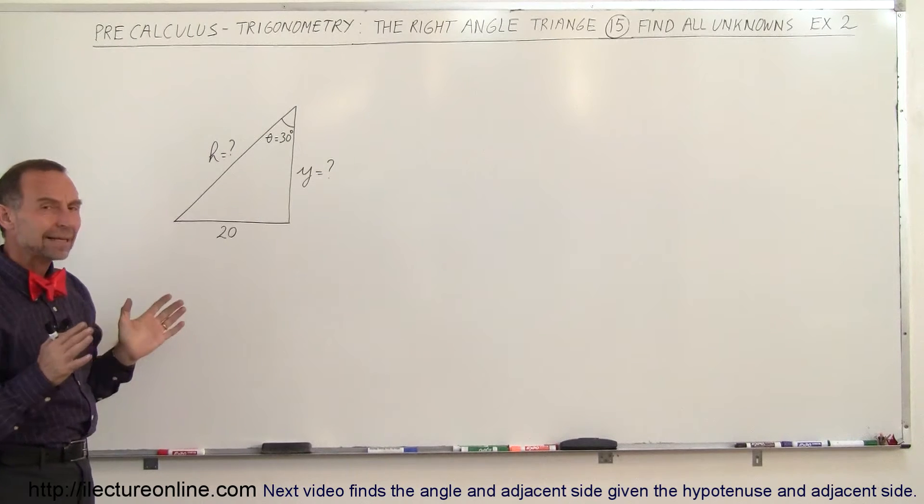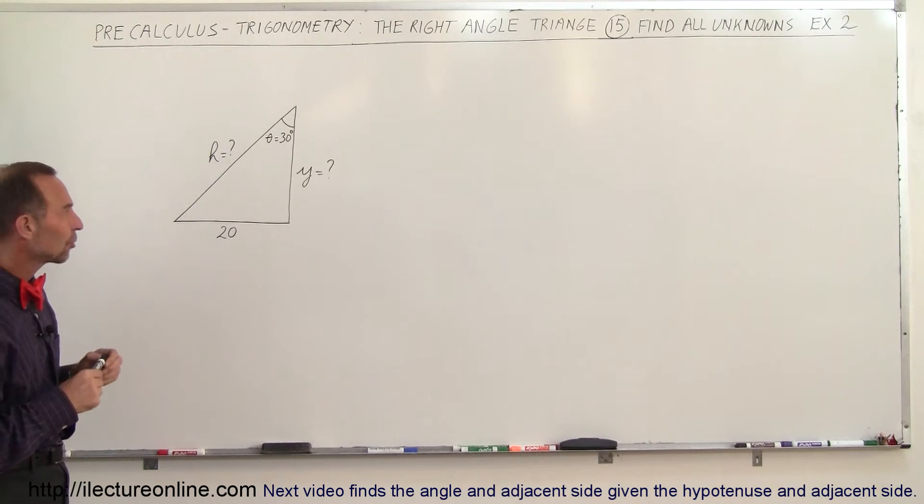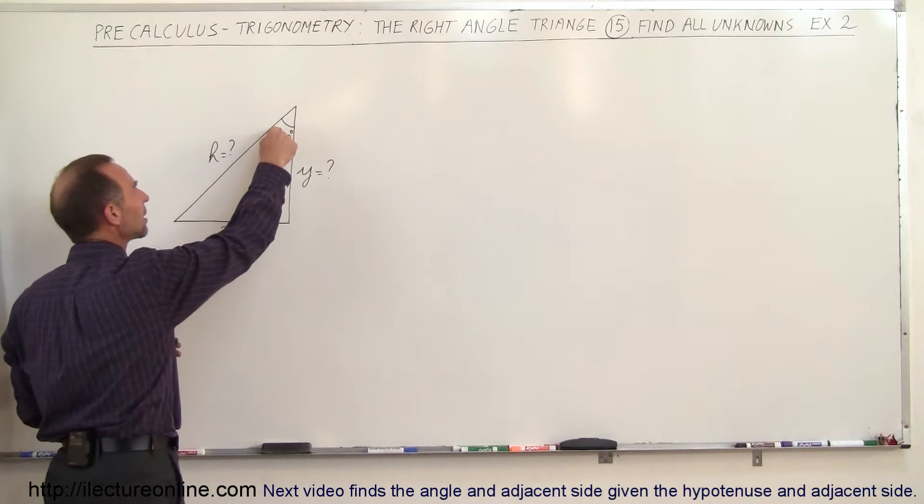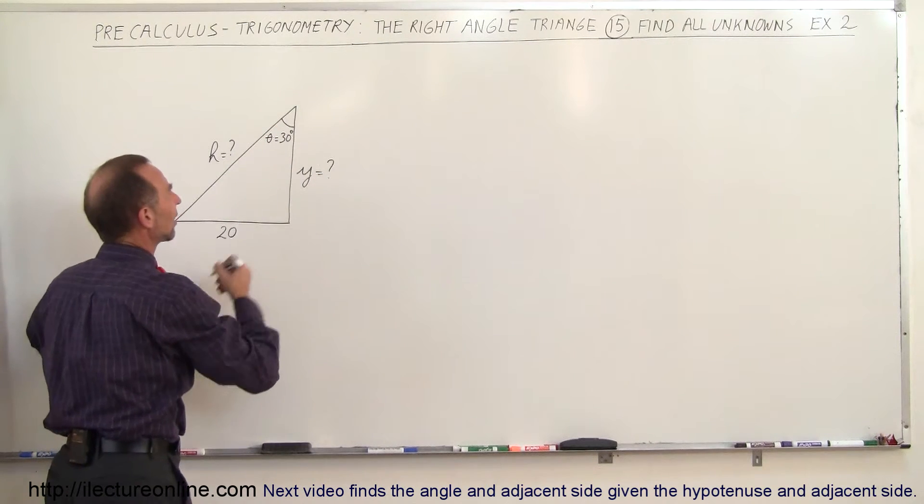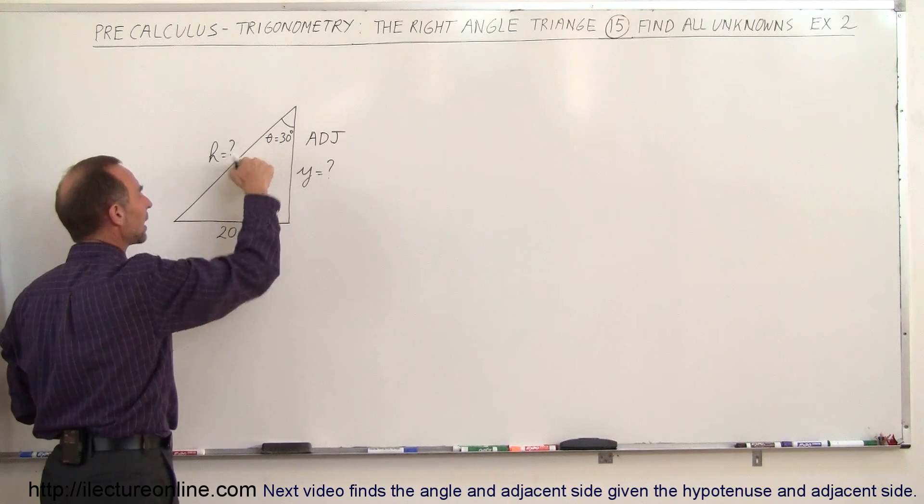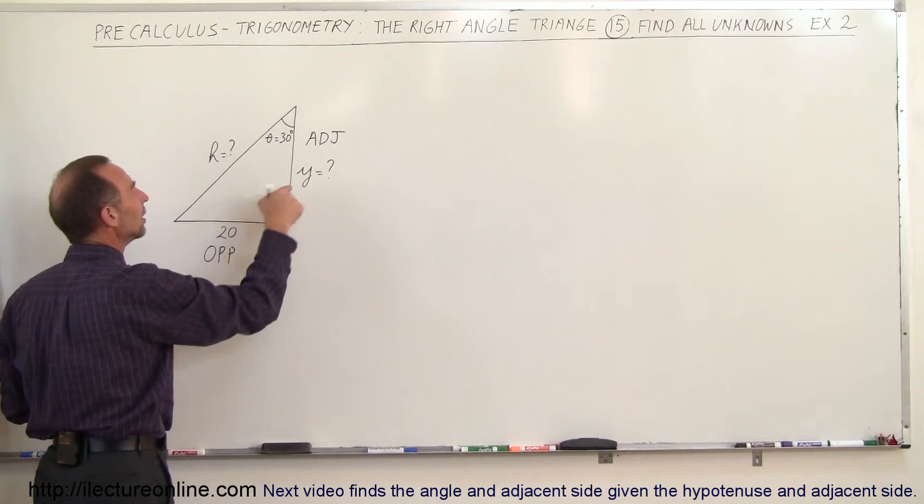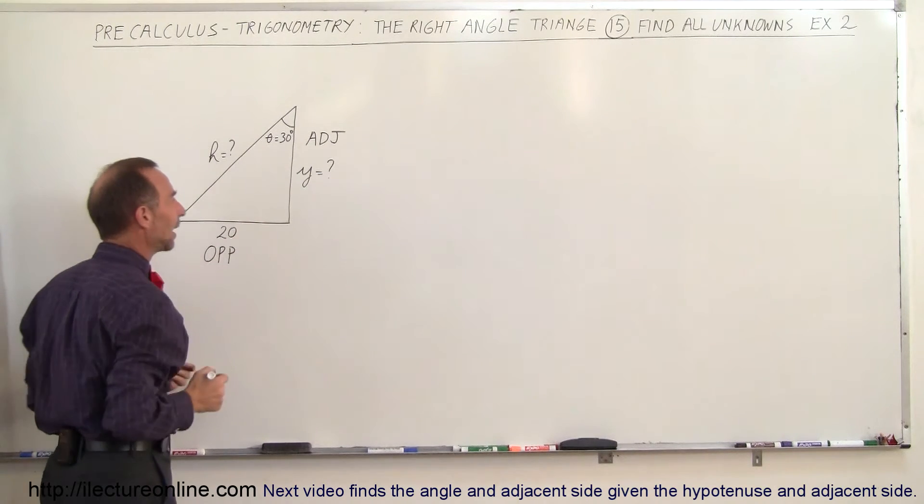Here might not be a bad idea to write which side is the opposite side, which side is the adjacent side, to keep things straight. Since the angle is over here, this now becomes the adjacent side, so let's label it adjacent side. And over here, this is opposite of the angle, so let's call this the opposite side. Notice that the opposite side is given, the adjacent side is not. We're looking for that.